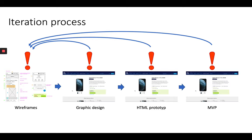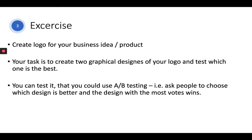As shown in this slide, we always start with wireframes, then move to graphic design, HTML prototype, and minimum viable product. When feedback comes and we need to make changes, we go back to the start — wireframes — and the process begins again. This iteration process of getting feedback and starting over is very important in terms of making your product and prototype much better than before.